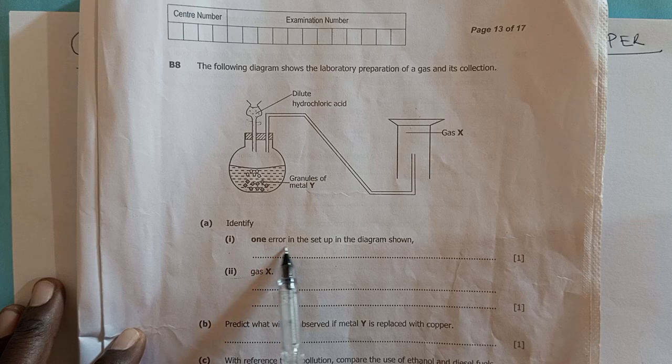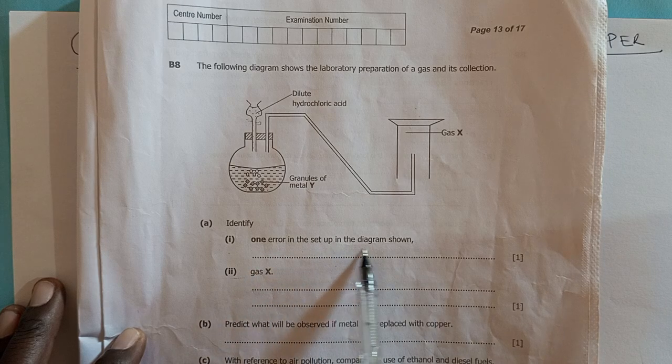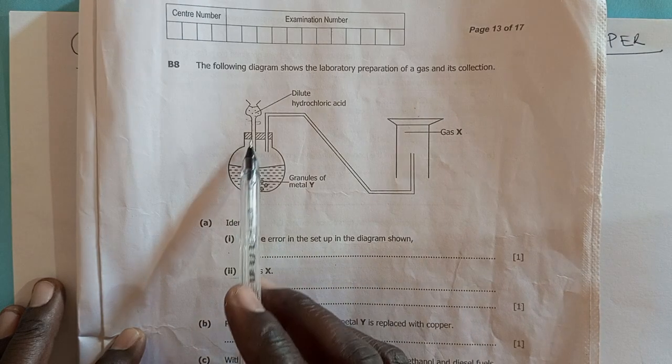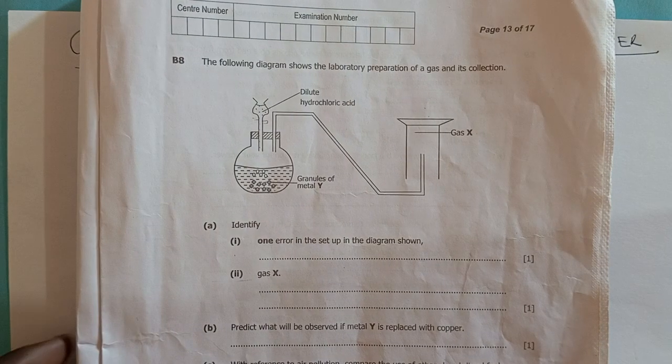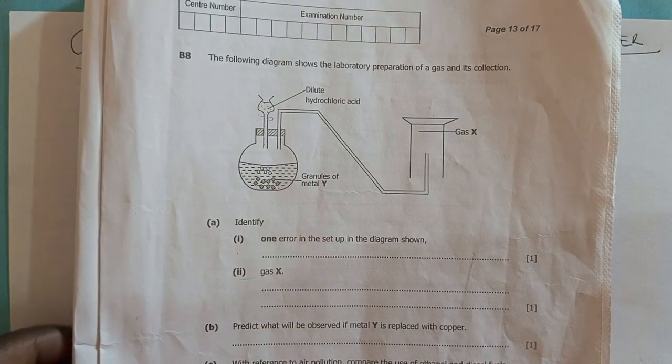Identify in Roman numeral one, one error in the setup in the diagram shown. The tap on the thistle funnel is missing. That is the error.